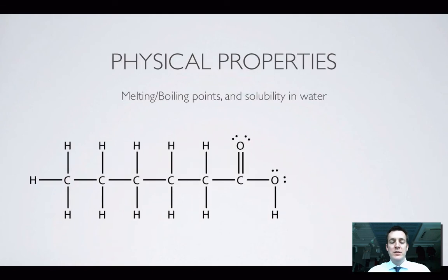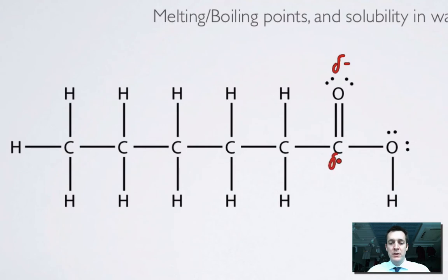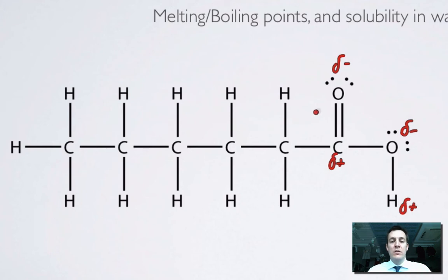Now, physical properties. We're going to look at very similar things to before. Let's look for some polar bonds and maybe some lone pairs. Here's a polar bond, so there are going to be dipole-dipole interactions. Here's a very polar bond between a highly electronegative element and a hydrogen, so there's also going to be hydrogen bonding.